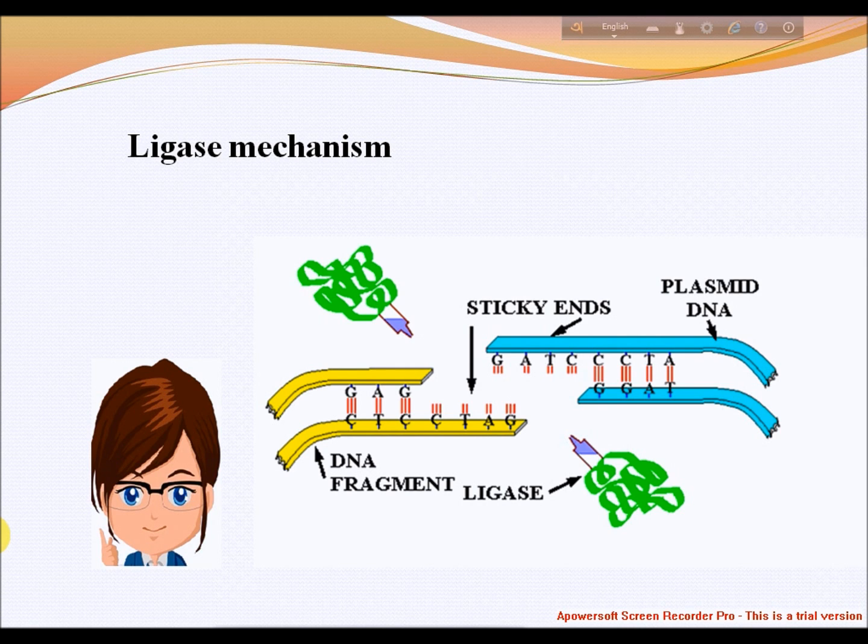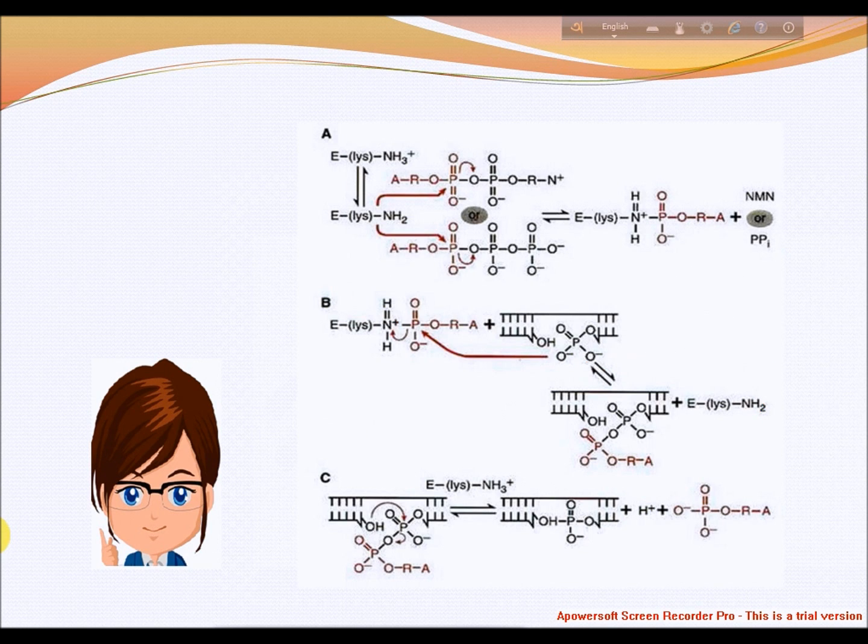Step one: adenylation of lysine residue in the active center of the enzyme; pyrophosphate is released. Step two: transfer of AMP to the 5' phosphate of the donor, forming a pyrophosphate bond. Step three: formation of a phosphodiester bond between the 5' phosphate of the donor and the 3' hydroxyl of the acceptor.